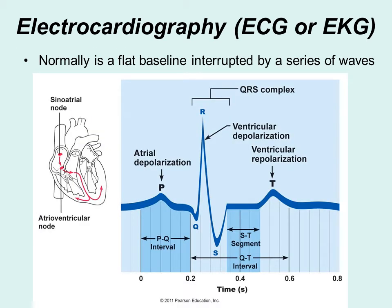On a standard EKG, you normally have a baseline, and then these peaks or waves that correspond to the intrinsic conduction system as the electrical impulse flows from the SA node to the AV node, and then through the bundle of His and Purkinje fibers. The first peak is the P wave, then it flows down into the QRS complex, followed by a flat segment between S and T, and then the T wave — corresponding to the depolarization and repolarization occurring between the atria and ventricles.